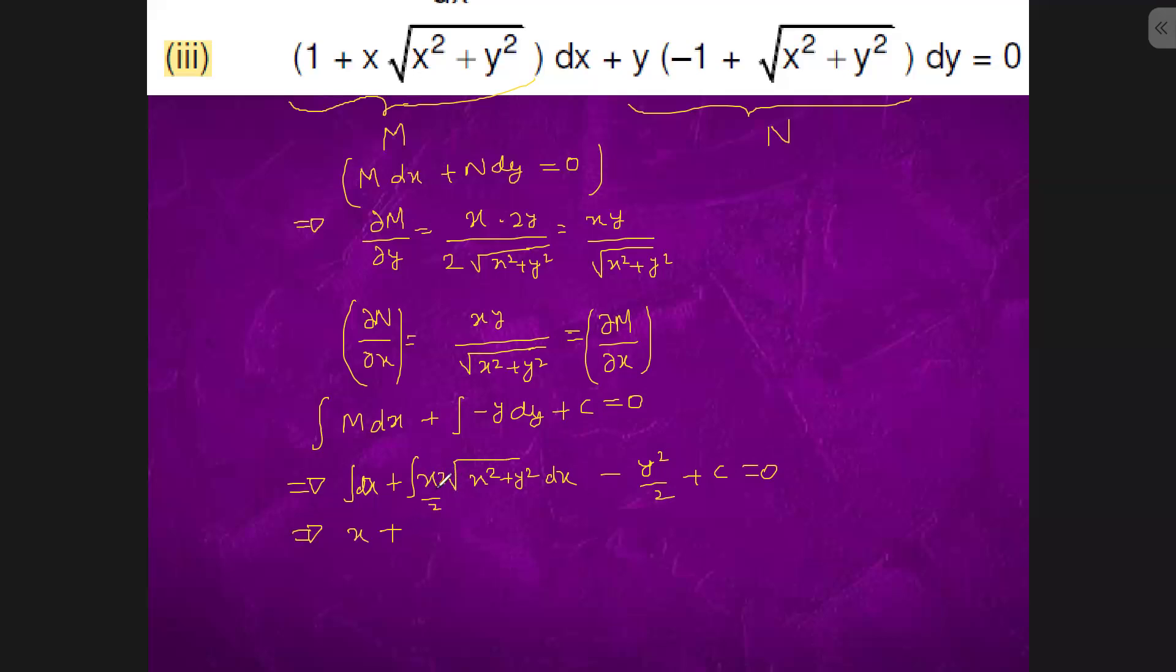When y square is constant, this is 2x. So 2x dx is differentiation of x square plus y square taken y square as constant.